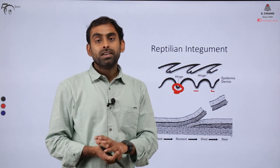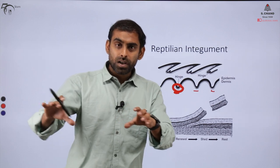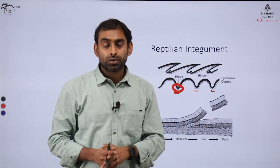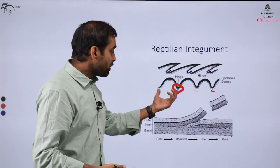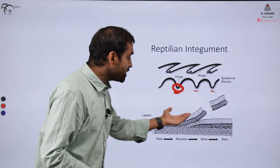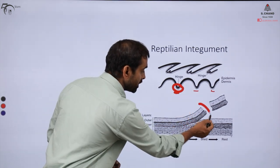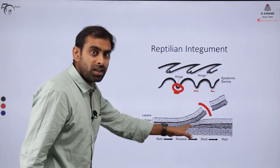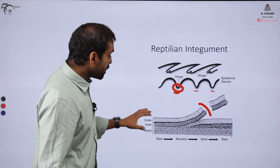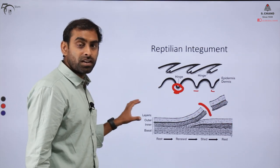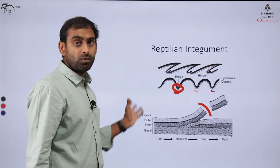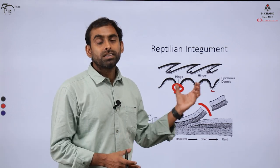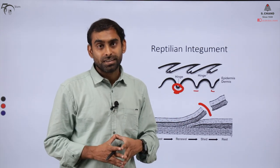You might have noticed that snakes and other organisms remove their entire body skin — it undergoes renewal. That renewal is possible because dead cells keep accumulating, gradually forming a separate layer, and underneath it, a new layer keeps forming. Over a period of time, the entire skin can be removed, and new skin actually emerges — a specialized feature of reptilian scales.